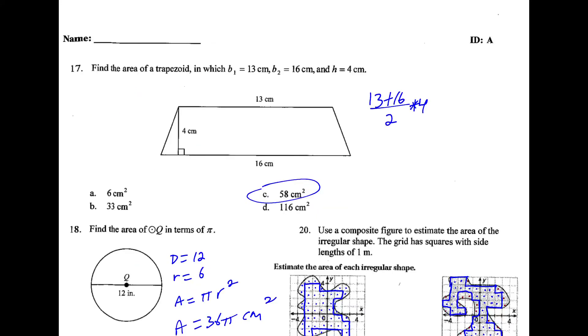Formula for area of a trapezoid, you take the base 1 plus the base 2 divided by 2 times the height. So plug all that in. Here's our answer, C, 58.